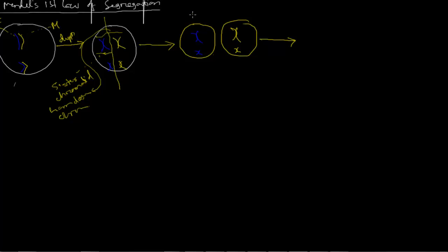Then the sister chromatids will be separated — along this line on each side. From one side you will get two, and from the other you will also get two, giving a total of four gametes.